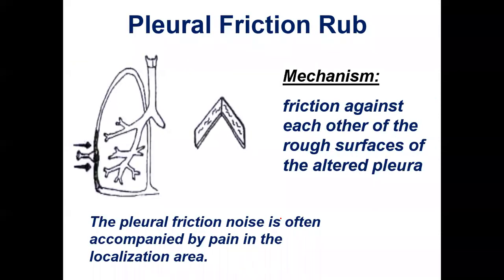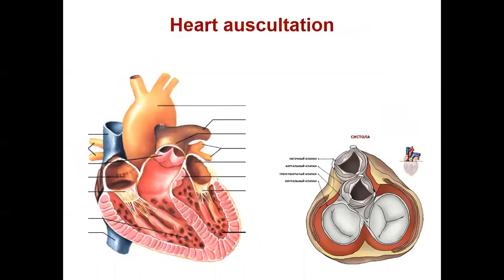Pleural friction rub is formed by friction due to changes in the surface of the visceral and parietal pleura — they become very rough and produce sound. Dry pleuritis forms pleural friction rub, and it is often accompanied by local chest pain. We will discuss this further together with damaging-of-pleura syndrome.